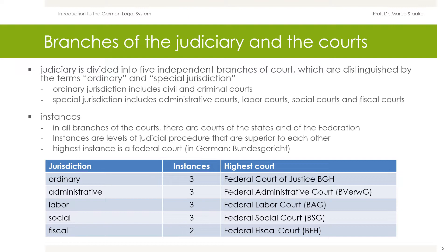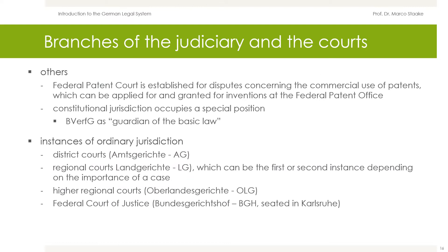The administrative, labor, and social courts have three levels of jurisdiction, while the fiscal courts have just two. The highest instances are the Federal Administrative Court, the Federal Labor Court, the Federal Social Court, and the Federal Fiscal Court. Another federal court, the Federal Patent Court, is established for disputes concerning the commercial use of patents, which can be applied for and granted for inventions at a Federal Patent Office.